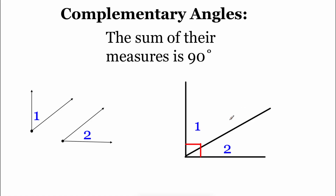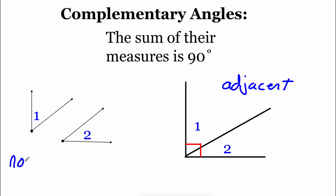These two angles on the right-hand side that are touching we would call adjacent — that just means they're right next to each other. These other two angles on the left-hand side are non-adjacent; they're not right next to each other, they're not connected.